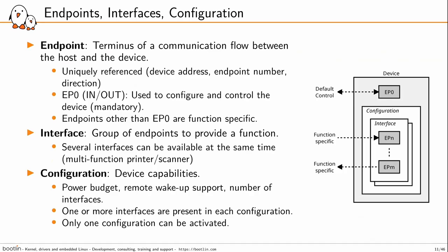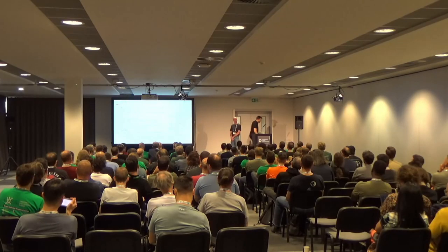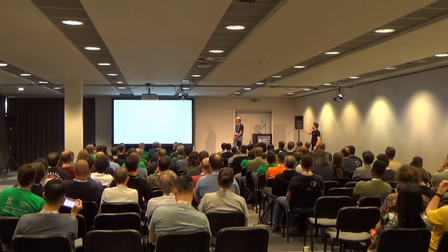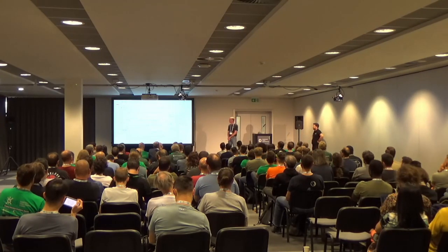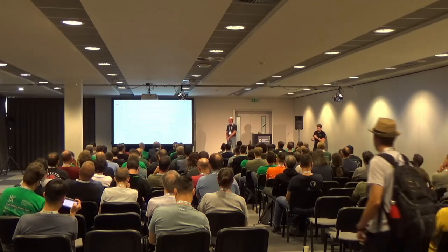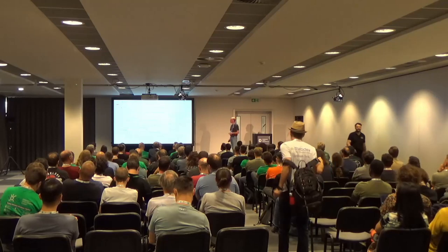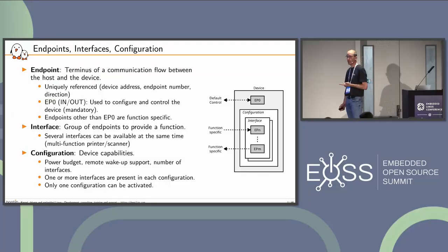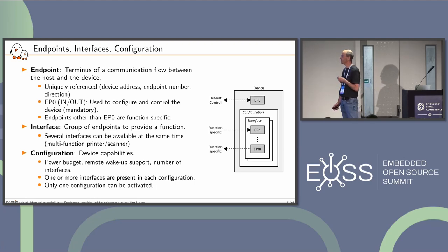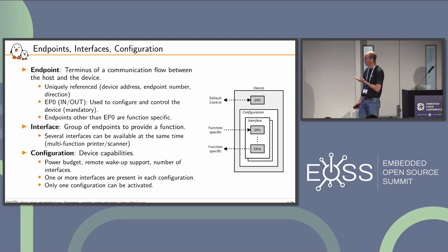An endpoint is simply the terminus of communication between the host and the device. It is uniquely referenced in the system using the device address, the endpoint number, and its direction. We have one mandatory specific endpoint: endpoint zero, used to control the device. It is mandatory because many requests defined in the USB standard pass through this endpoint.